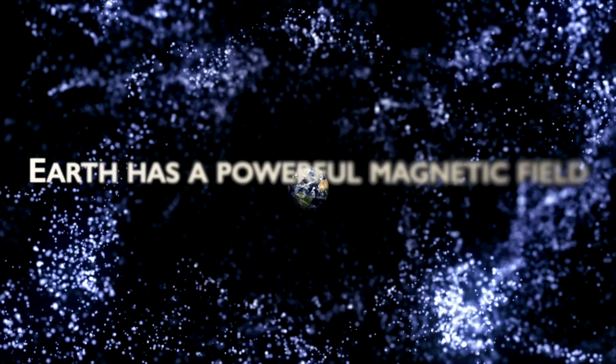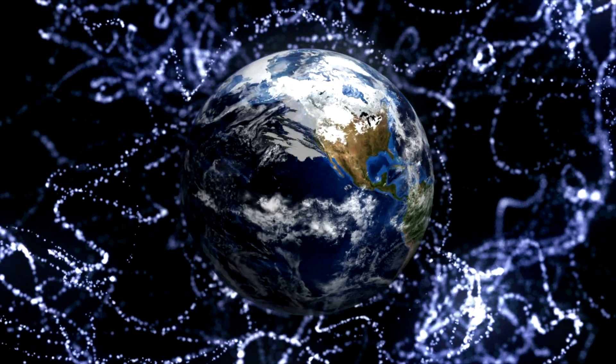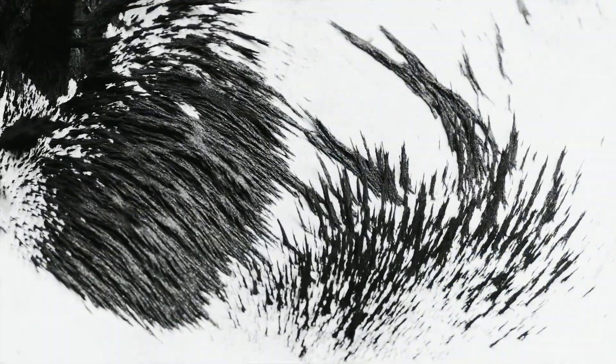Earth has a powerful magnetic field. This phenomenon is caused by the nickel-iron core of the planet, coupled with its rapid rotation. This field protects the Earth from the effects of solar wind.